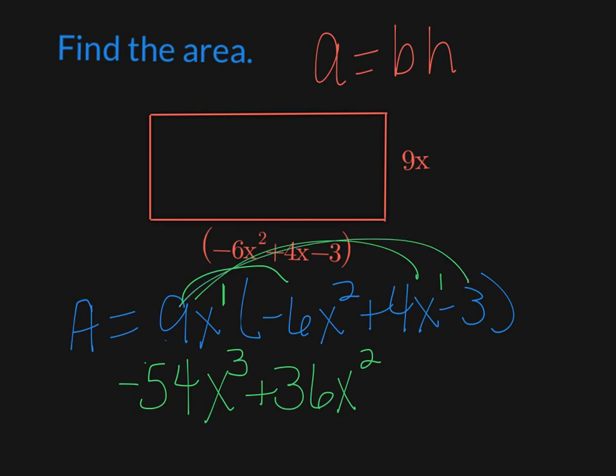And then 9x times negative 3, so 9 times negative 3 is negative 27, and I have the x. And that is my answer. Thank you.